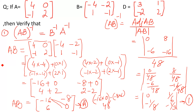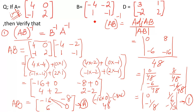It's a lengthy question but very easy — you must practice it. To summarize: first multiply A and B to get matrix AB, then apply AB whole inverse = adjoint(AB) / det(AB). Switch the diagonal positions, change the signs of the off-diagonal, and det(AB) uses cross multiplication with a minus sign giving +48. Now we prove the right hand side: B inverse times A inverse.